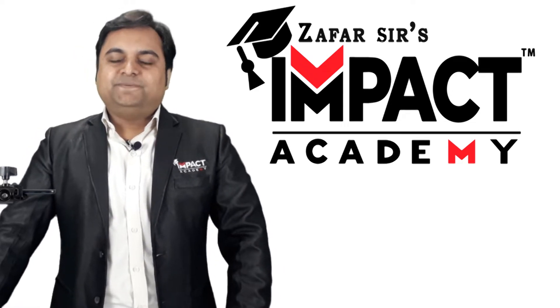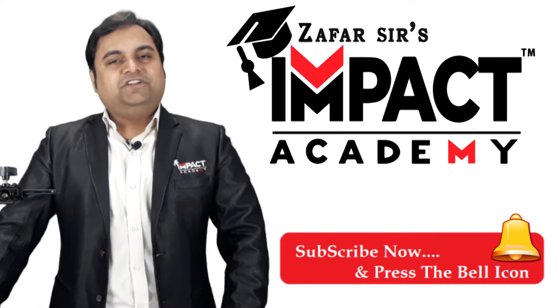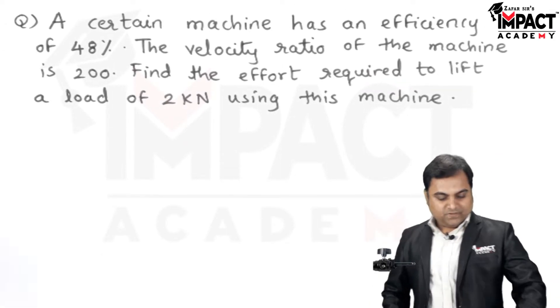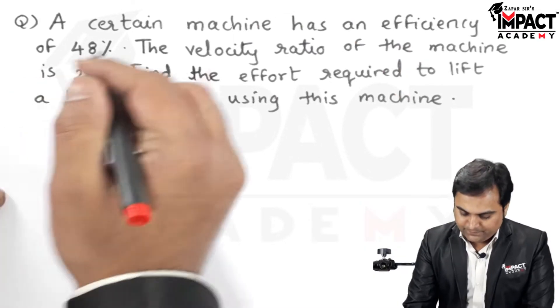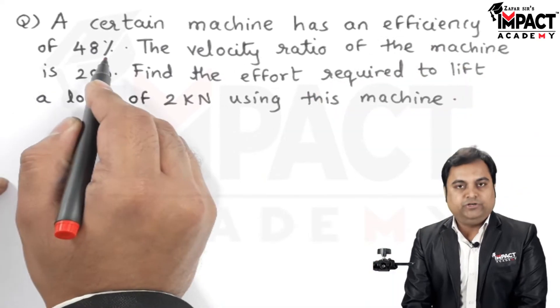Hi friends, here in this video I'll explain the problem on simple machines. So let's get started. Now here is the question. I'll read the question and write the data along with it. It is given a certain machine has an efficiency of 48%.